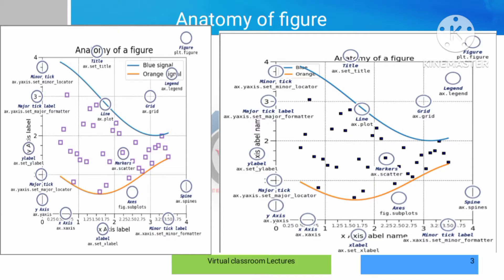Next we have different plot types — line plots and scatter plots. In the figure, there are lines and a square box structure called a Grid. Usually we use a grid structure to help read the values on the x-axis and y-axis. We can display the grid with or without lines. The figure also contains major ticks, minor ticks, and a legend.